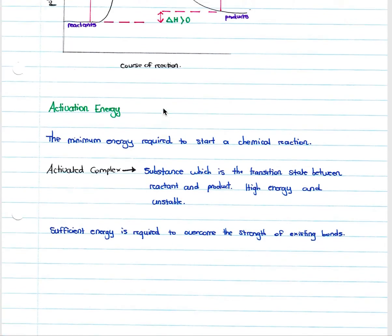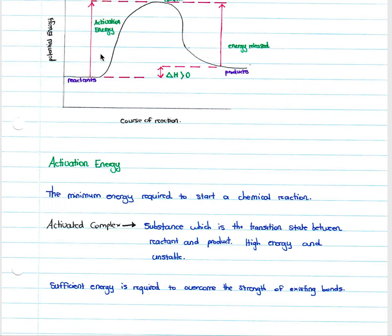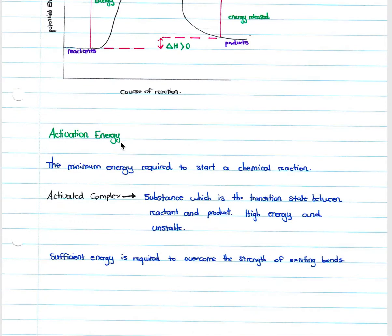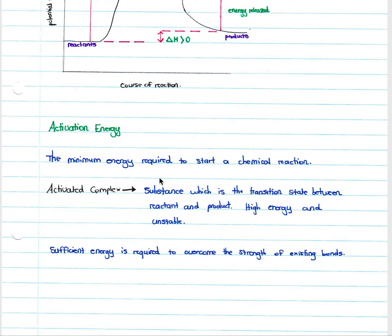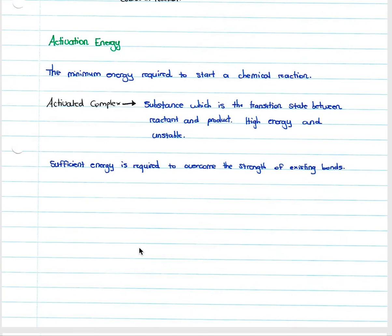Activation energy is the minimum energy required to start a chemical reaction — it is the energy needed to reach the peak of the graph. The activated complex at that peak is the transition state between reactant and product; it is high energy and unstable. Sufficient energy is required to overcome the strength of existing bonds in the reactants.